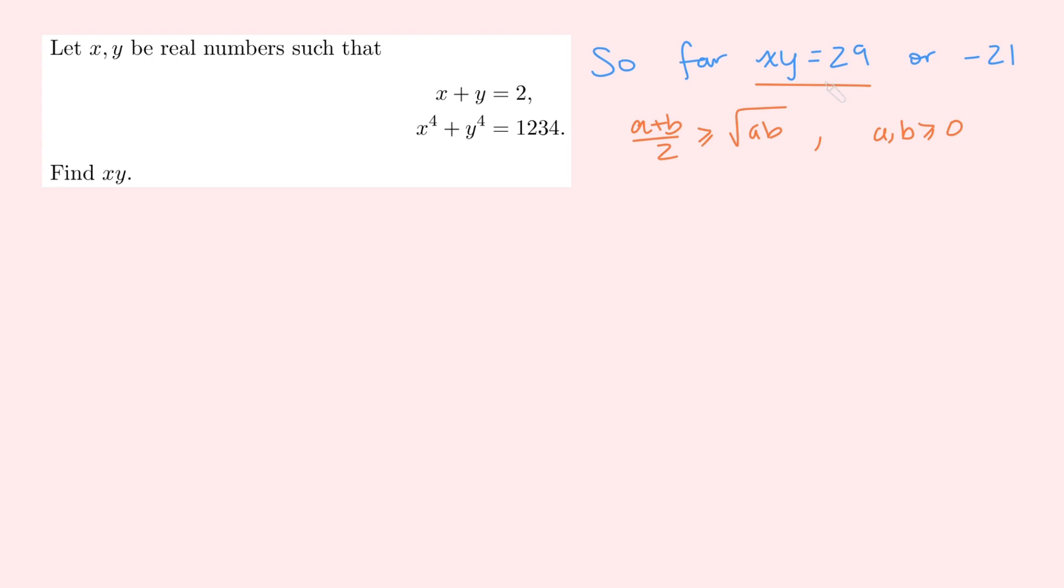So here's the trick. We're going to eliminate the possibility that x times y is 29. Here's how we're going to do this. Let's suppose for contradiction that x times y was 29. Well, we also know that x plus y is 2. And so combining those two facts together, that implies that x and y must both be positive. Because if either of them were negative, well, if exactly one of them was negative, their product would be negative. And if both of them were negative, well, then their sum would be negative.